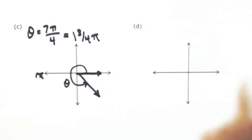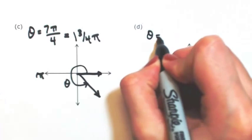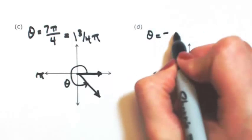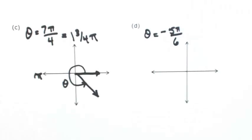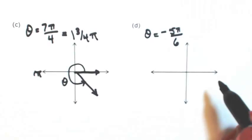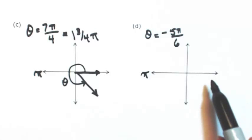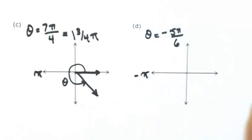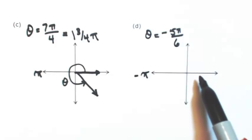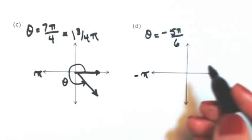Let's do one more. Let's say that theta is negative. Let's say 5 pi over 6. So again, half a revolution is pi. So if I'm going the other way, that would just be negative pi. So negative 5 sixth of a pi places us on the third quadrant.